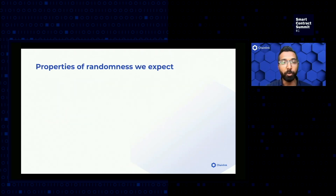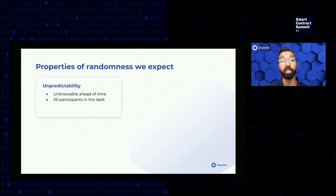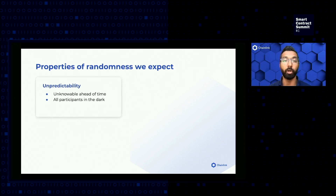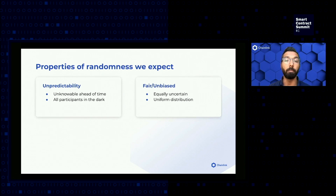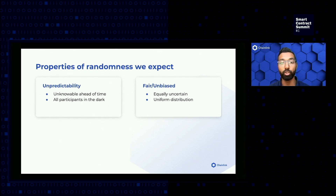Let's consider the properties we care about from randomness. It must be unpredictable, which means it is unknowable ahead of time, and all participants are in the dark. If a single participant is able to predict it, your results are broken. It must also be fair and unbiased — every participant must be equally uncertain so as to not have an advantage over any other participant. Uniform distribution is critical in order for users to be confident they all have a fair shot at winning.